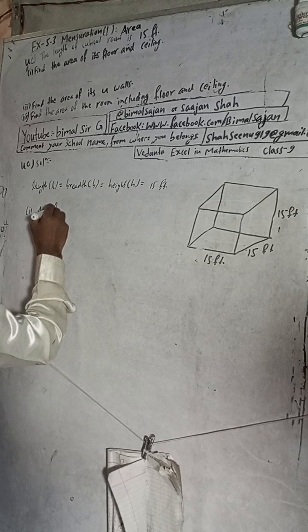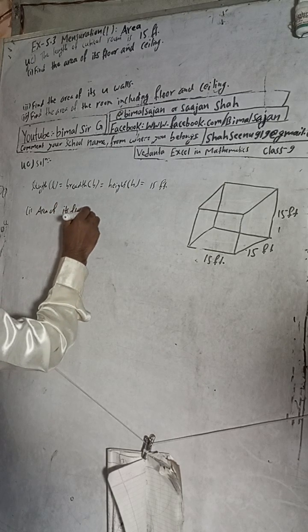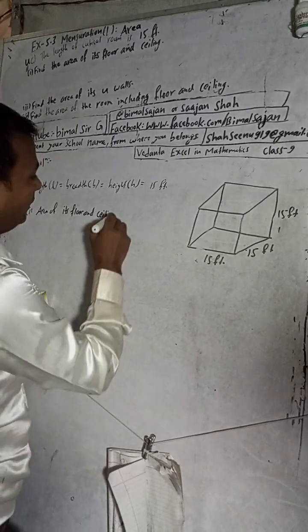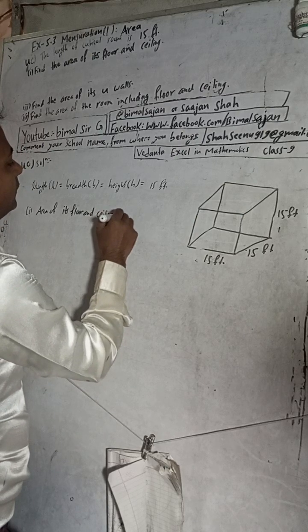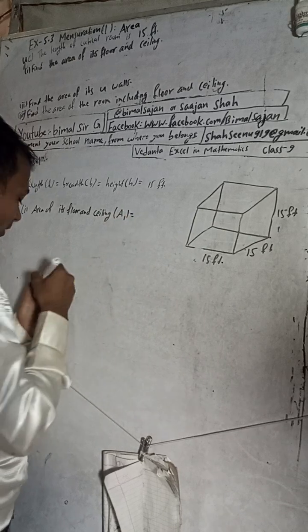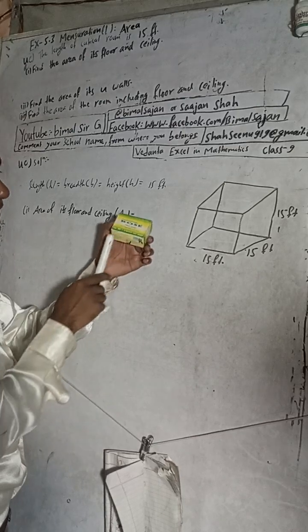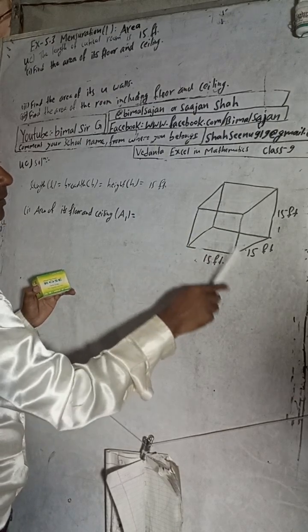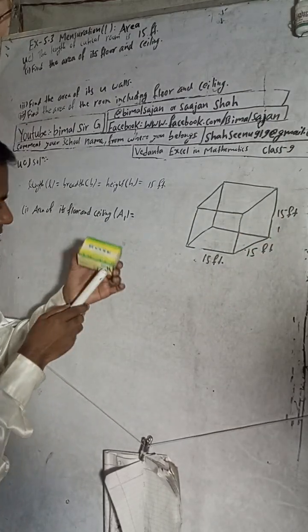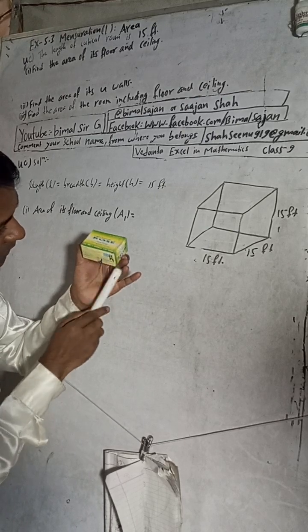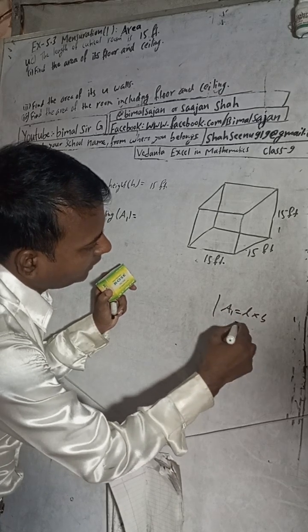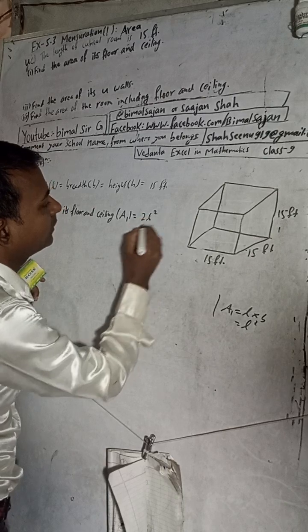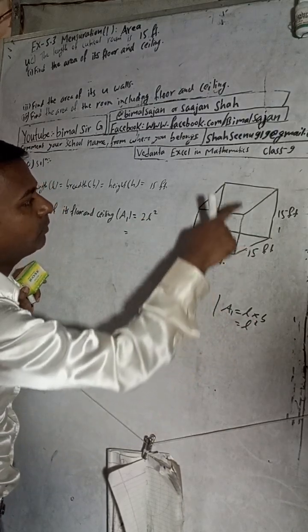Number one: find the area of its floor and ceiling, which we call A1. The floor and ceiling are both square shapes. The floor has length 15 and breadth 15. Area of the floor equals L into B, but since L and B are the same, it is L squared. The ceiling is the same, so total area of floor and ceiling is 2L squared.